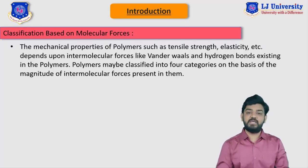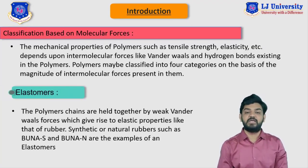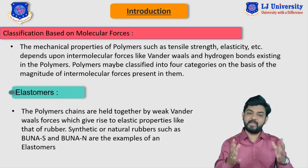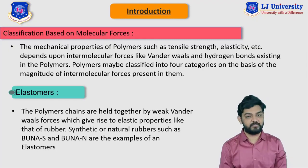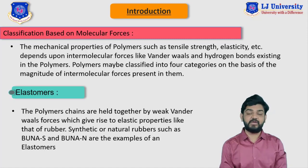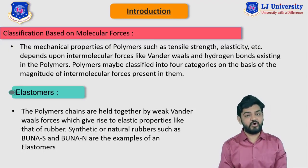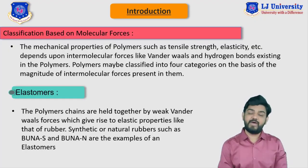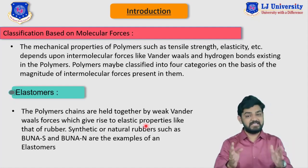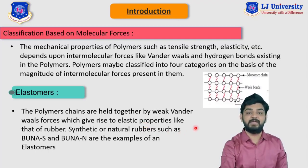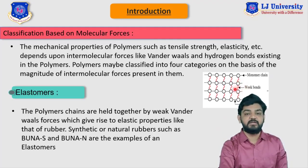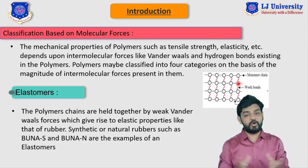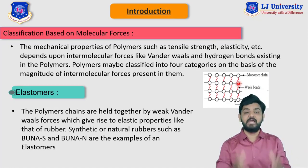Let's start with the elastomer. The polymer chains which are held together by weak van der Waals bonds are considered as elastomers. As you can see on the screen, this polymer structure is connected with weak van der Waals bonds shown by the red lines. This weak bond provides elasticity to the polymer, and hence we consider this polymer as the elastomer.